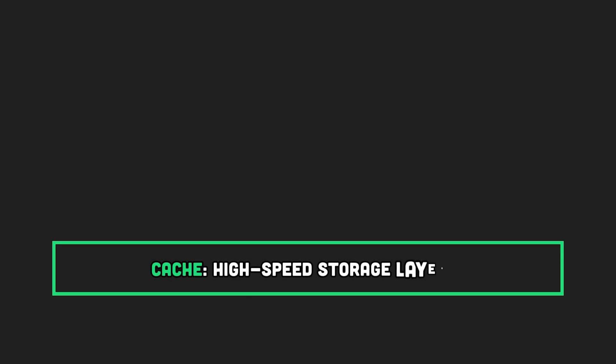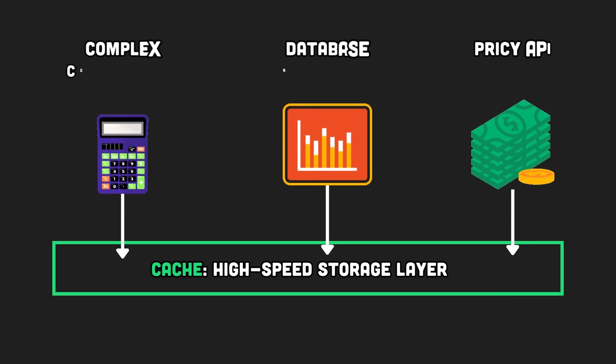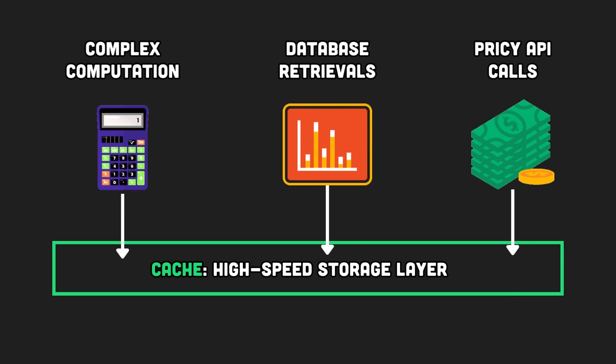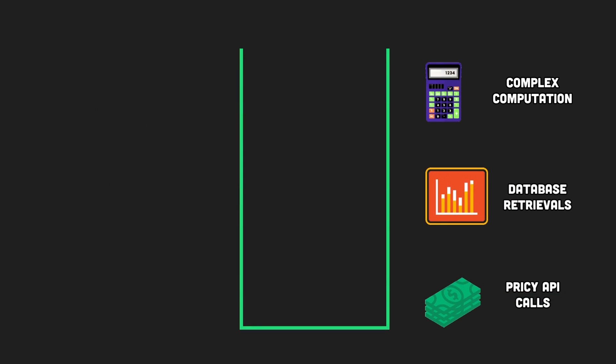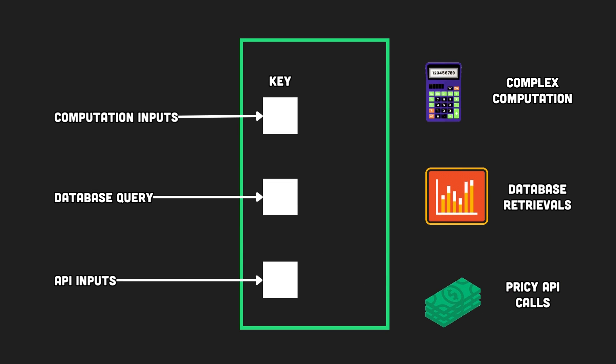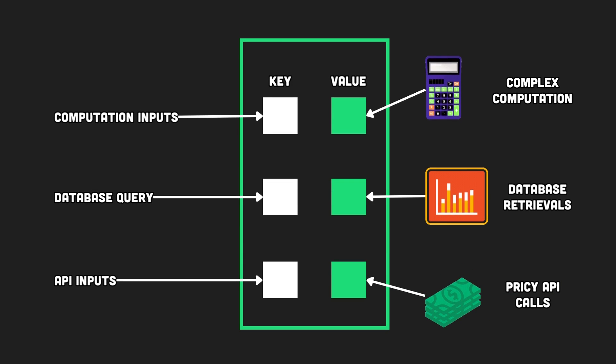Caching is like a high-speed storage layer storing frequently used data, like results from complex computations, database searches, or pricey API retrievals. Think of it as a key-value store — the keys are your requests and the values contain the resulting data. However, traditional caching is too simple, as your queries need to match exactly the key in the cache to get the stored data as a result.